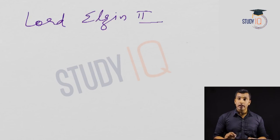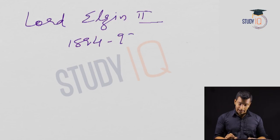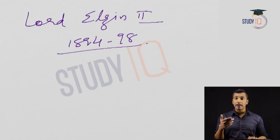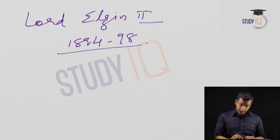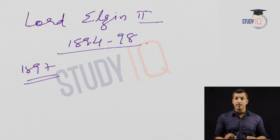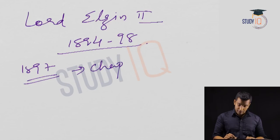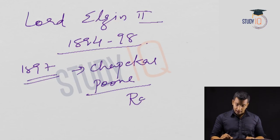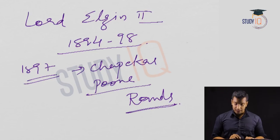The next Governor-General is Lord Elgin II, 1894 to 1898. The one important event to discuss is that in 1897, the Chapekar Brothers of Pune killed an English official named Rance. This is a very famous and important incident — the Chapekar Brothers of Pune killed the English official Rance.